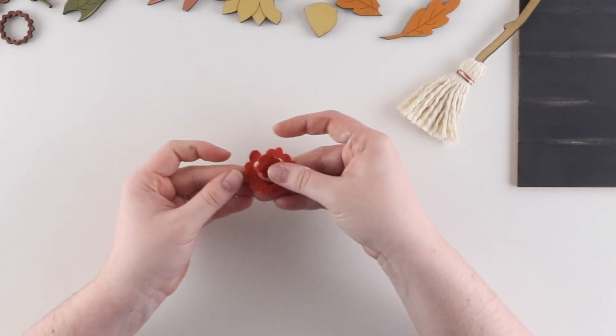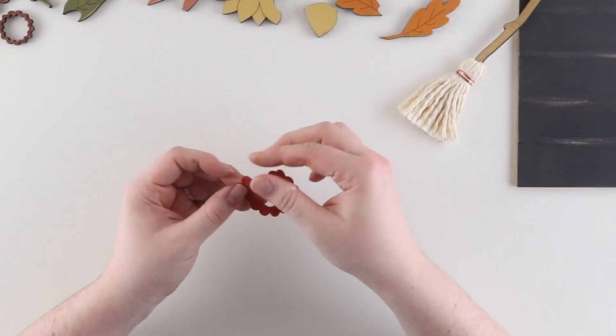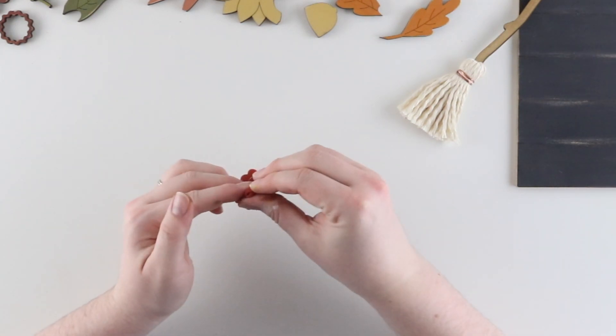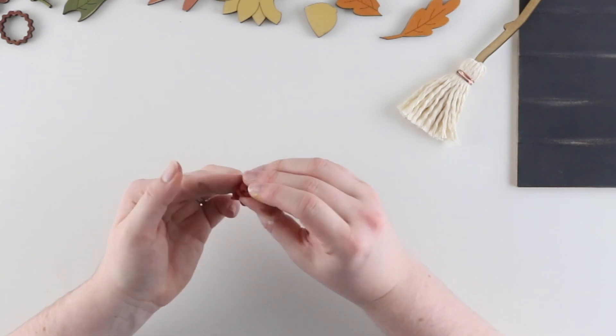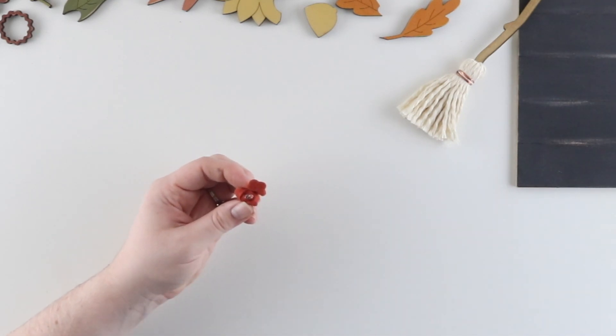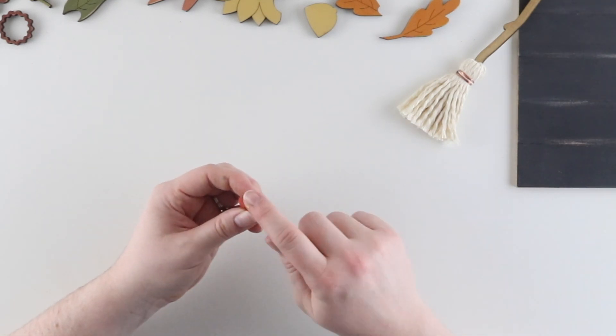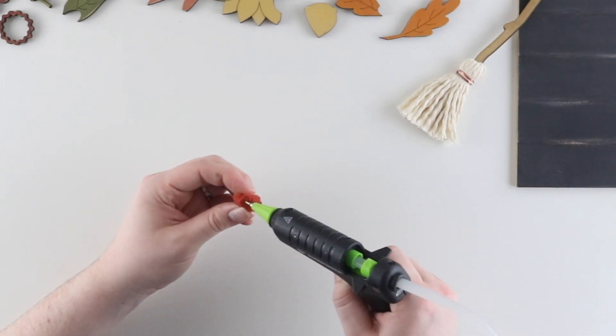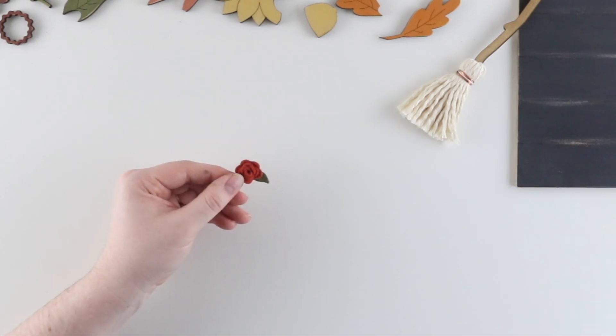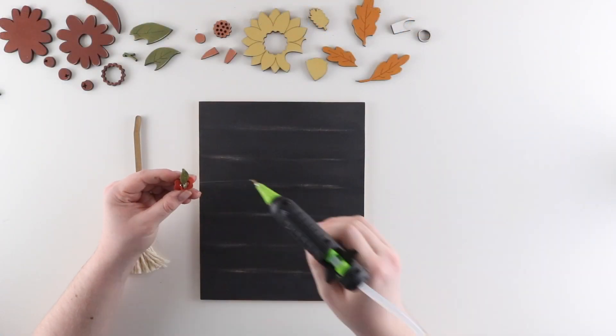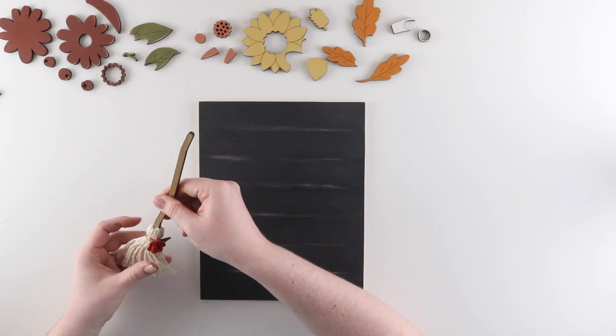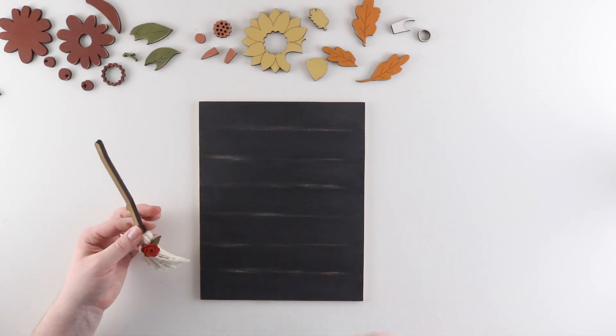To assemble the felt rose I'm going to start on the outside of the spiral and roll the flower up on itself. As you roll the petals will naturally start to lay a little bit flatter. Once we reach the end of the spiral we're going to use a dab of hot glue to hold it all together. Then using another dab of hot glue we're going to attach the felt leaf. Now it's time to start putting everything together. So I'm going to use a dab of hot glue to attach the felt flower just below the copper wrap on my broom.